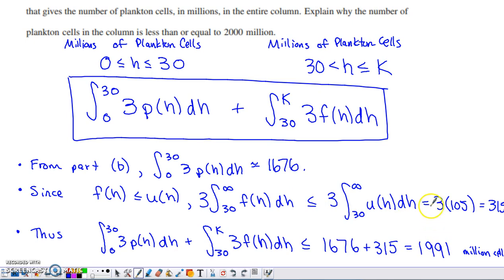And so what we've effectively done here is we've proven that the number of million cells of plankton in the entire column of water is less than or equal to 2,000 million. In fact, we've proven that it's less than or equal to 1991 million cells.